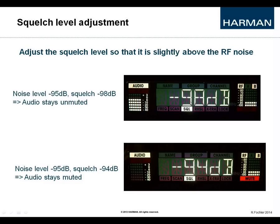Adjust the squelch level so that it is slightly above the RF noise floor. For example, with a noise level at about minus 95 dB, if you set the squelch lower to minus 98, the noise will pass through and be heard as audio noise on the receiver's output — squelch is not muting your noise. If you set the squelch threshold to minus 94 dB, the audio output will be muted and noise won't be heard accidentally on your receiver's output.